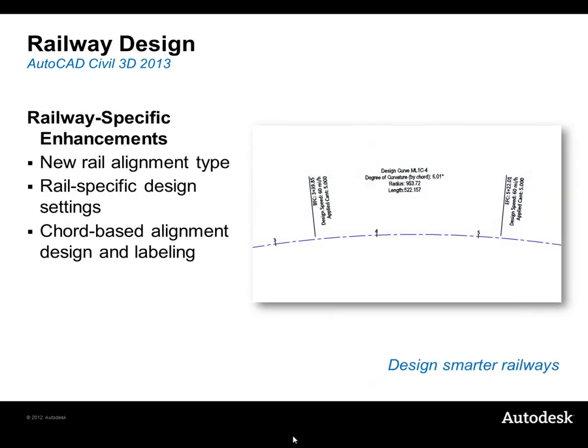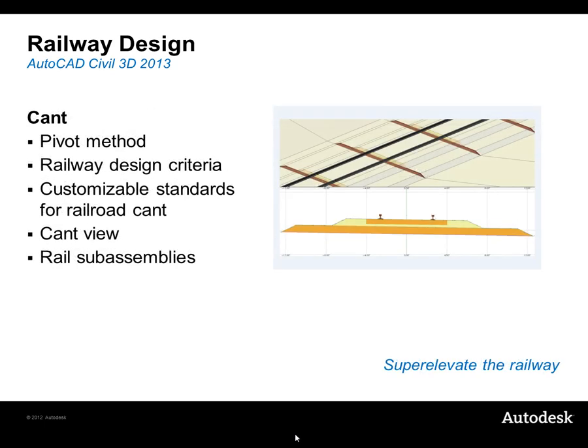In addition to corridor improvements, Civil 3D now supports railway design. Previously, alignments had to be curve-based for alignment geometry; it can now be chord-based, consistent with railway design. We can also now support cant, which is the super elevation equivalent for railway. So where the competition would say we can't do cant, we now can. We'll take a look at those parameters in the demonstration portion.